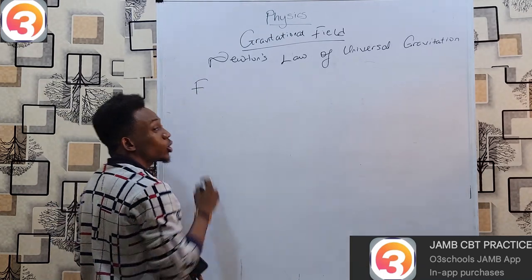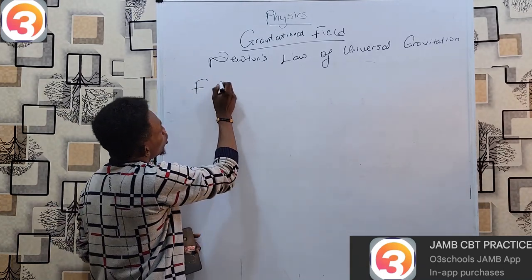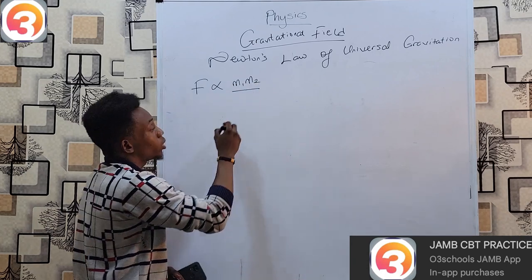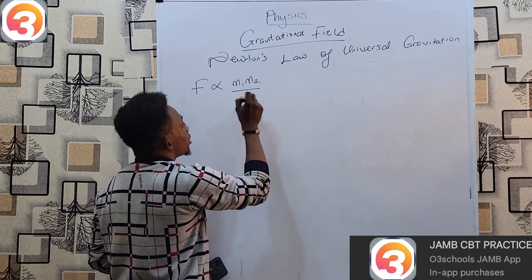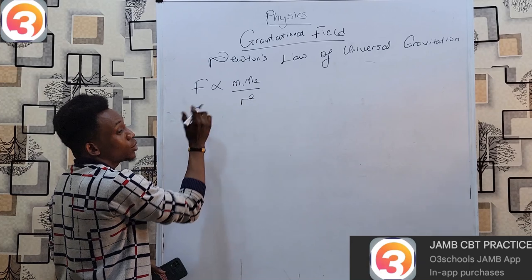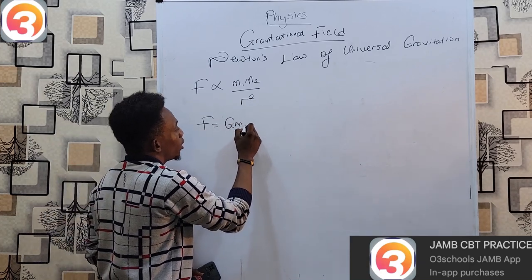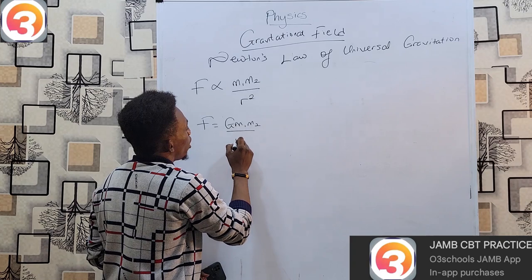Objects in the universe attract each other with a force which is proportional to the product of the masses and inversely proportional to the square of the distance apart, which gives us, introducing your constant: F = G m1 m2 / r².